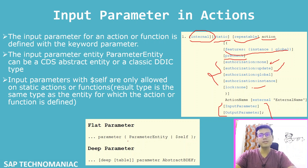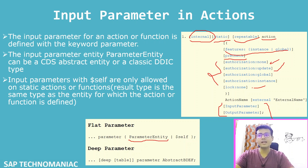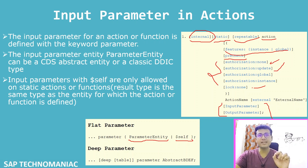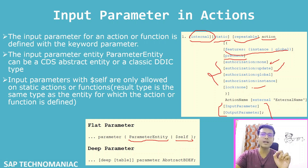The flat parameter can be of any CDS entity type, abstract entity, or it can be %$self as well. But whenever we are using the input parameter as %$self, we have to make sure the action is static — not instance. For instance actions, we cannot define the importing parameter as %$self. That is a very important thing.